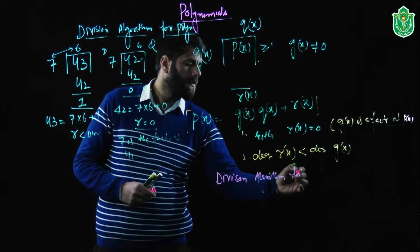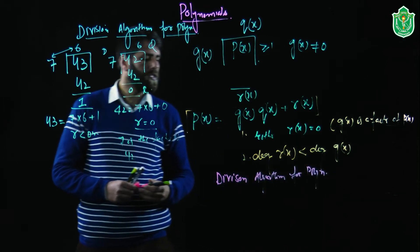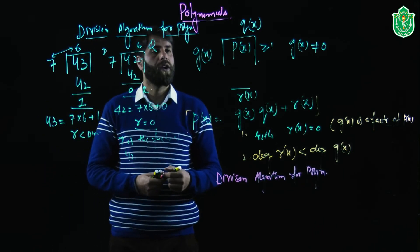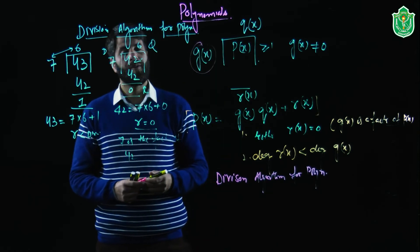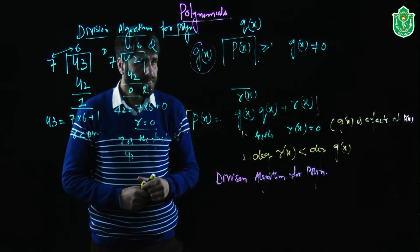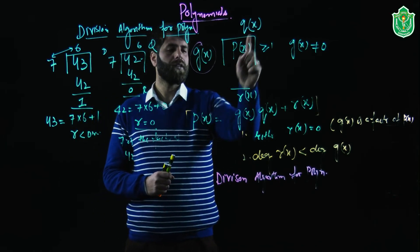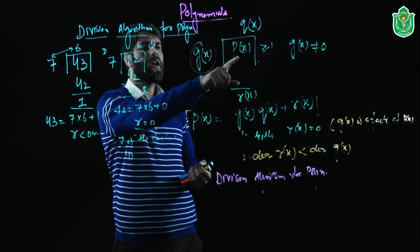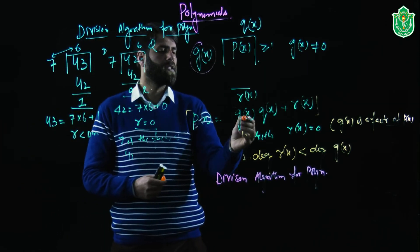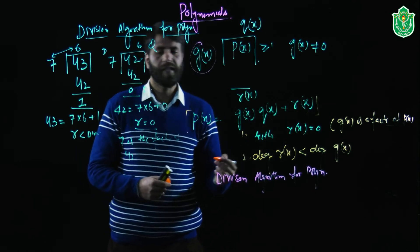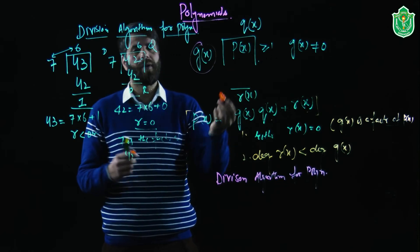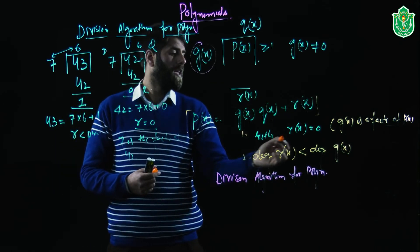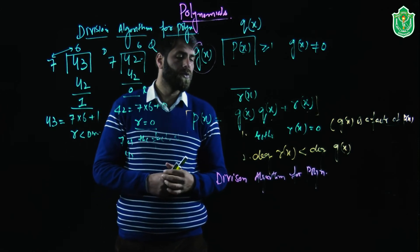To repeat: if you have polynomial p of x and divide it by a non-zero polynomial g of x, you get quotient q of x and remainder r of x. Then p of x equals g of x into q of x plus r of x. Either remainder equals 0, in which case g of x is a factor of p of x, or degree of r of x is less than degree of g of x.